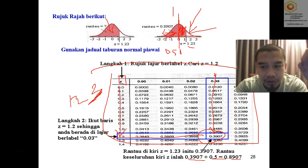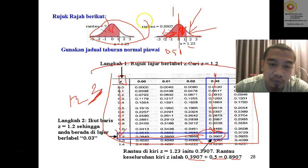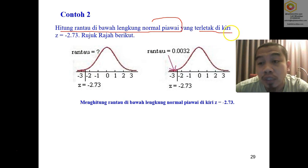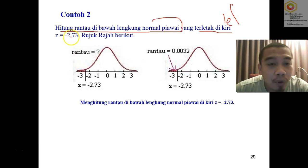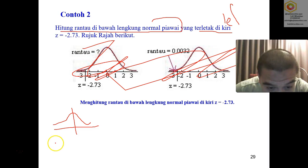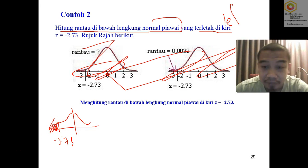For the next example, you need to know how to draw the z-tabulation curve. For a negative z value, such as z = -2.73, it is located on the left side because it is negative. On the z-tabulation curve, this falls to the left of center, which is zero.